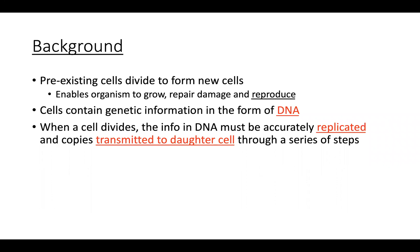The parent cell is the original cell we start with. Through a series of steps, that parent cell will undergo changes in preparation for being divided into two new cells. One of the main things it's doing is duplicating its genetic material. In the eukaryotic cell cycle, in the process of mitosis, we're going to generate an identical copy of the parent cell. When a cell divides, the information in the DNA must be accurately replicated and copies transmitted to the daughter cell.